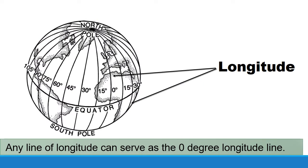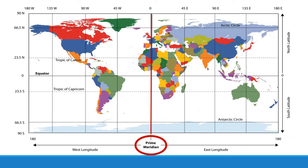Any line of longitude, or meridian, can serve as a zero degree longitude. To avoid this confusion, there is an international agreement that the meridian running through Greenwich, England is considered the official prime meridian. The world's nations have agreed that the prime meridian passing through the Royal Observatory in Greenwich, England will serve as the prime meridian.